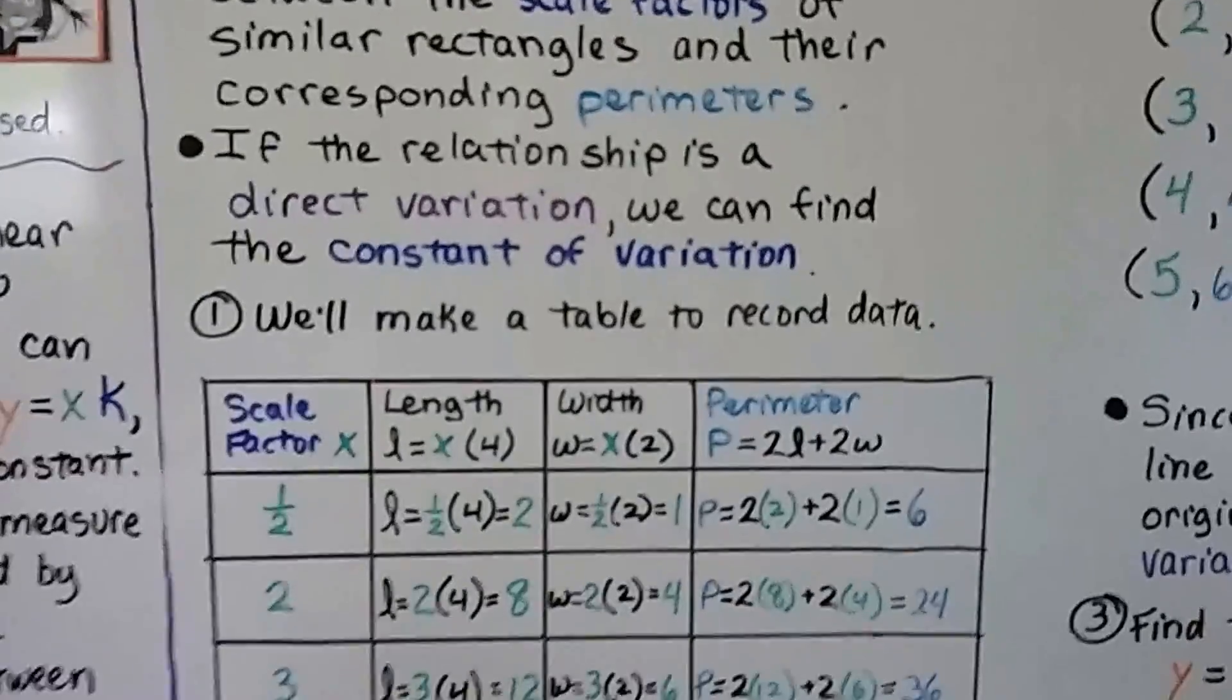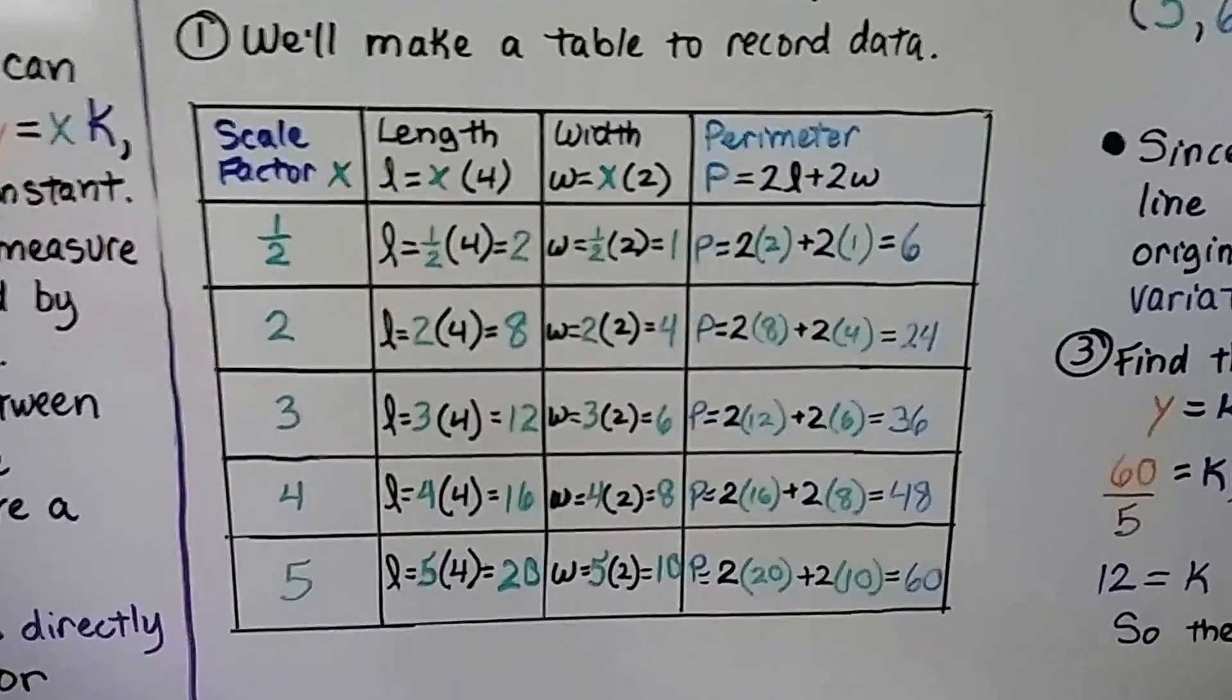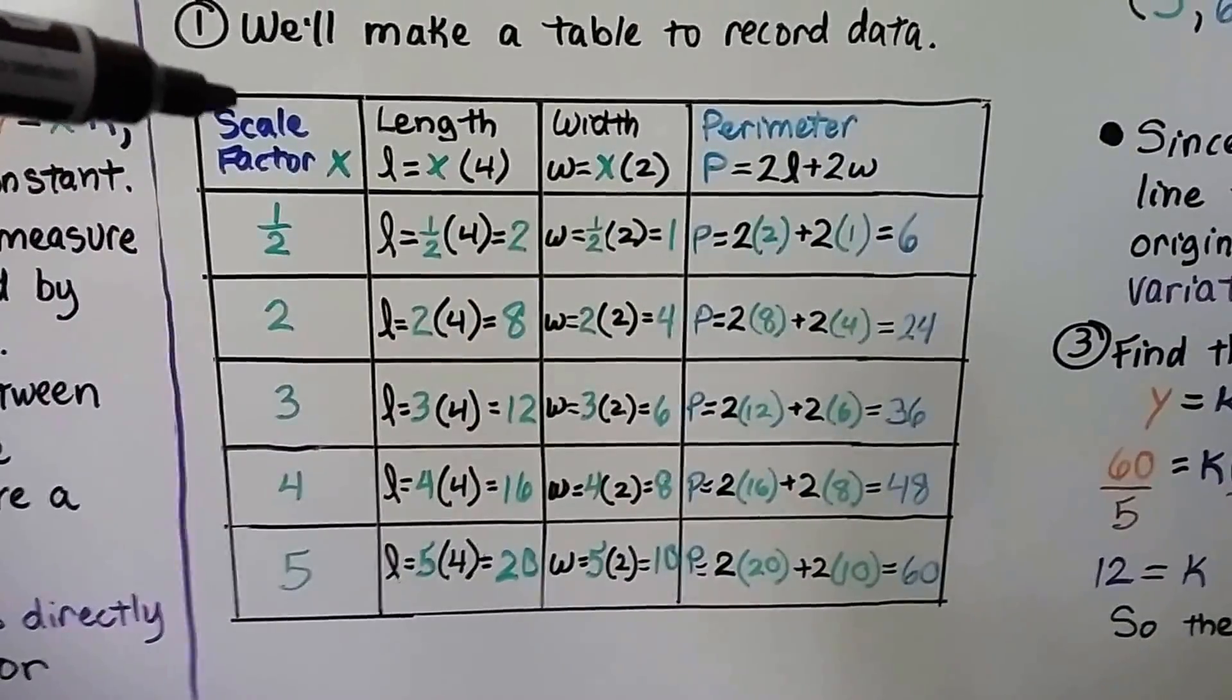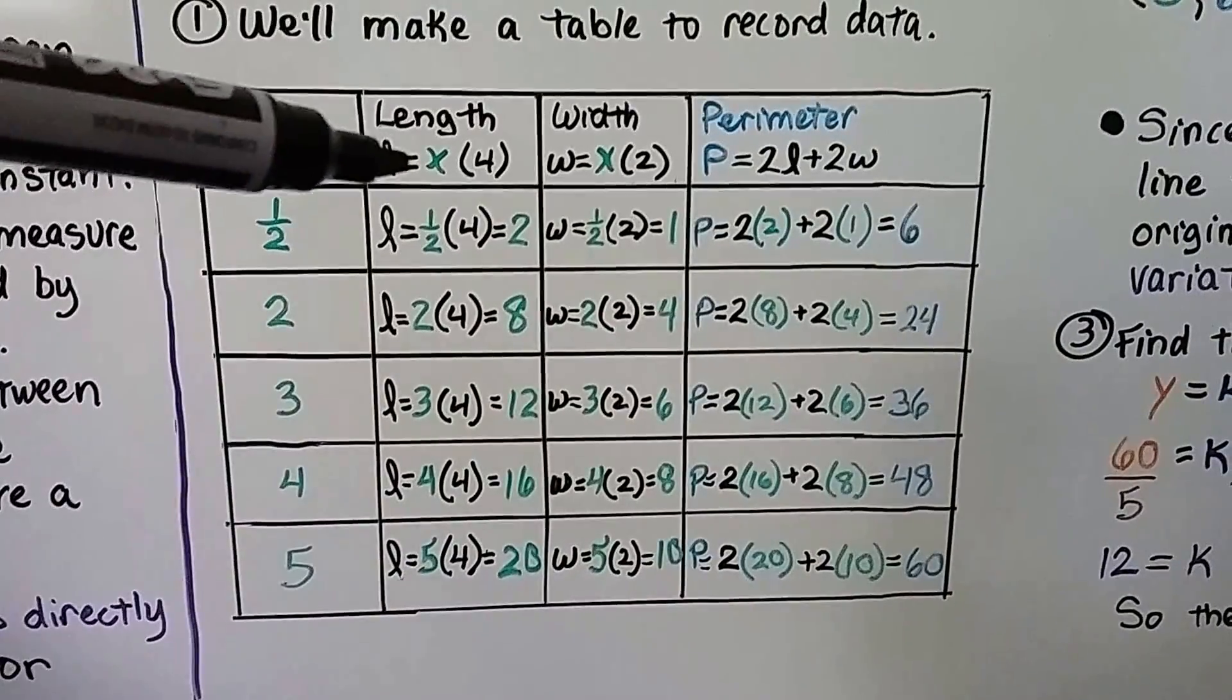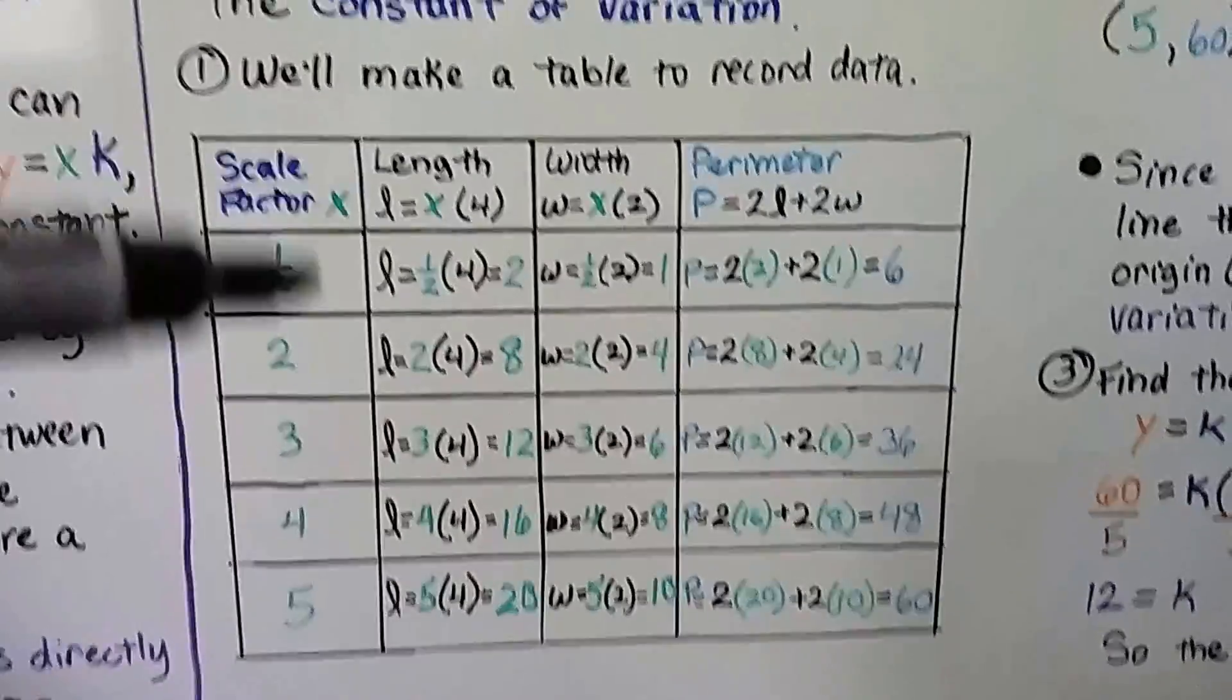So the first thing we'll do is we'll make a table to record our data. So on the top, we have a scale factor x, we have our length, the length is going to equal x times 4, because that's our length.